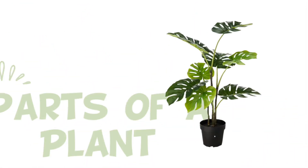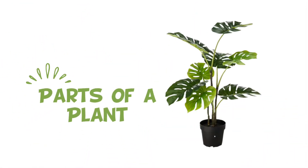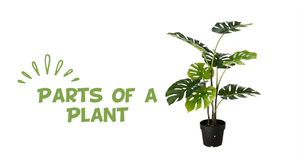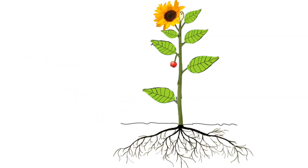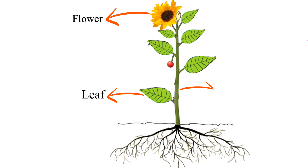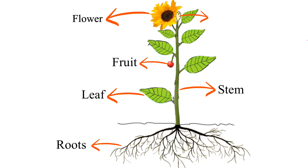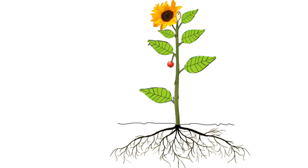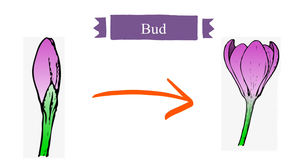Hello children, today we are going to learn the parts of a plant. The parts of a plant are flower, leaf, stem, roots, fruit, and bud. So let us learn about the bud — it is a small outer covering that protects the baby flower inside it.